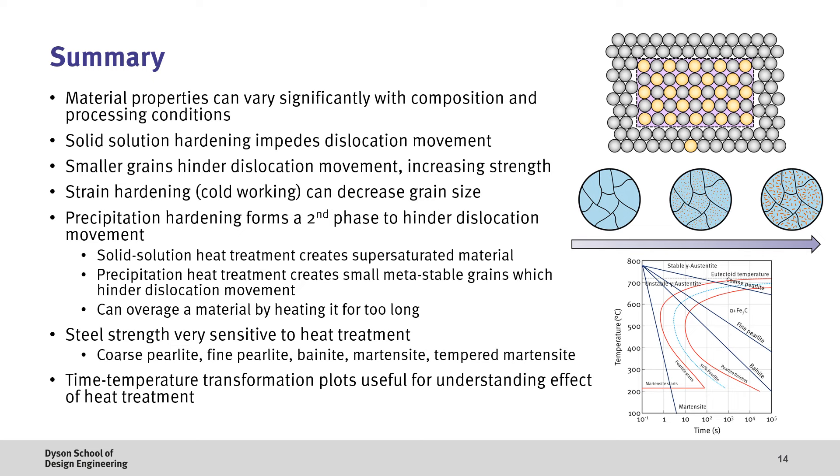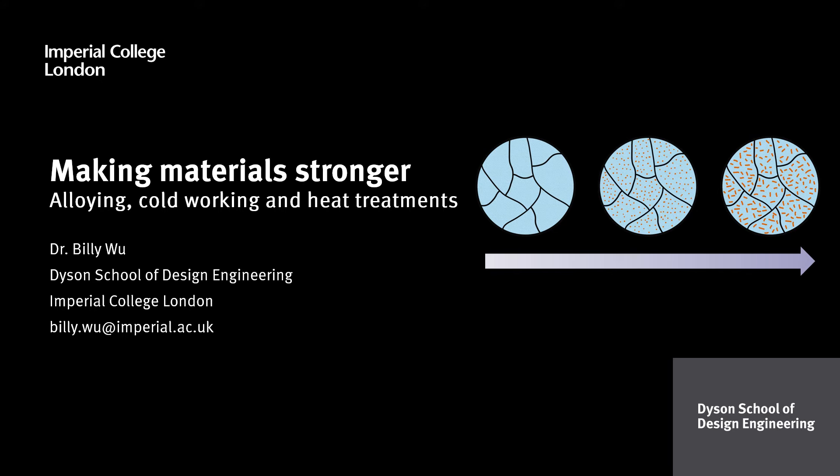And finally, we looked at how we can quantify and map out the influence of these cooling rates and resultant microstructures using the time-temperature transformation plots, or TTT diagrams. So thank you for listening, and hopefully this video has been a useful introduction into how we can make materials stronger through processes such as alloying, cold working, and heat treatments. Again, this video follows on from previous videos on equilibrium phase diagrams and steels, so if any of these concepts weren't clear, please do check them out!